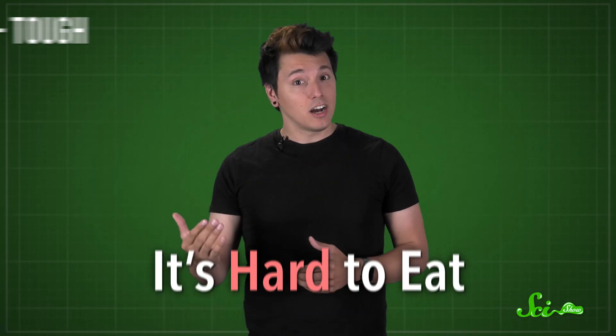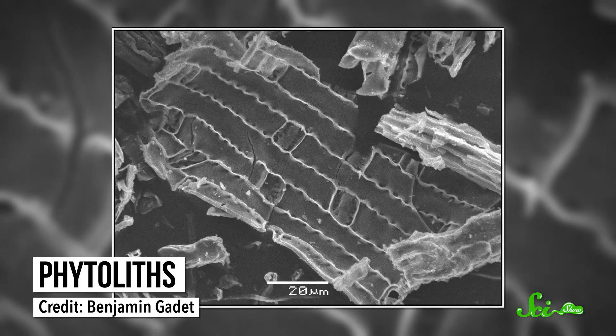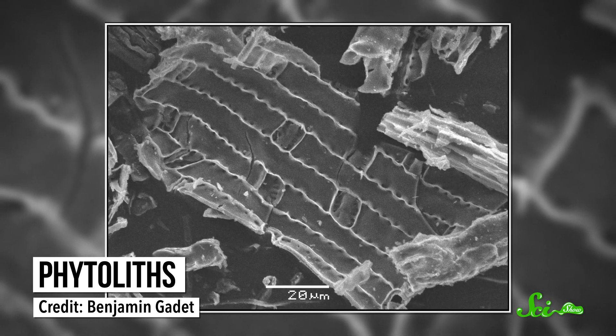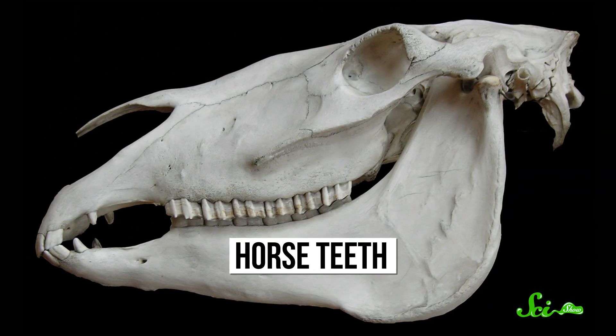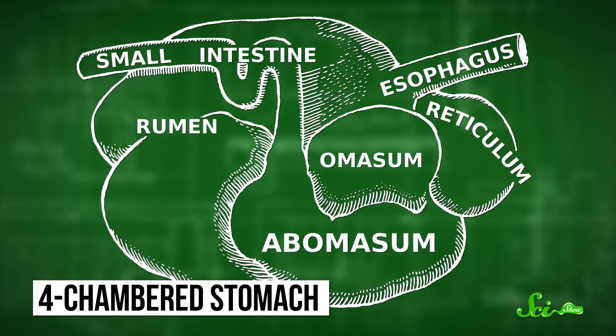Grass is so important because it's hard to eat. It's tough, low in nutrients, and has little bits of silica incorporated into its tissues specifically to discourage herbivores. Technically called phytoliths, they're basically sand, and chewing on sand is less than amazing for your teeth. Rather than not eating it, a lot of mammals just got really good at chewing and digesting grass. They evolved teeth with high crowns, more resistant to being ground down. They evolved complex stomachs, like the four-chambered arrangement in cows, to extract as much nutrition as possible. And they evolved long legs adapted to running around in the new, open grassland habitats.